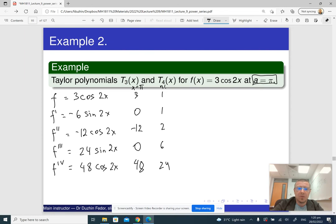All right, so now in order to find the corresponding coefficient, we've got to divide the value of the derivative by n factorial. So we're going to have 3, 0, minus 6, 0, and 48 over 24 is 2.